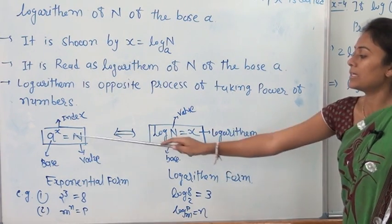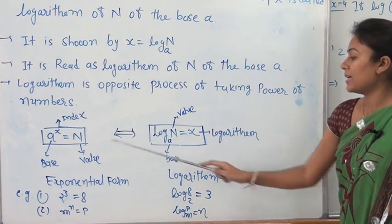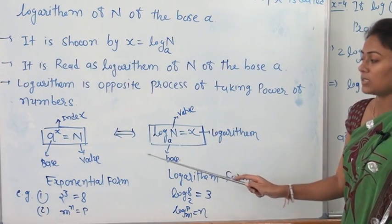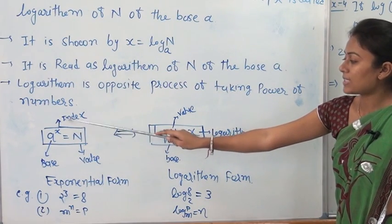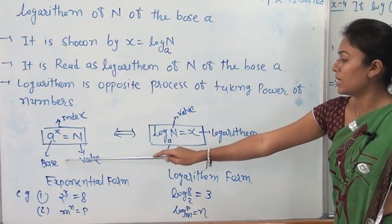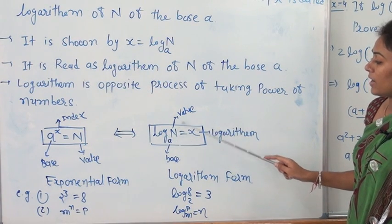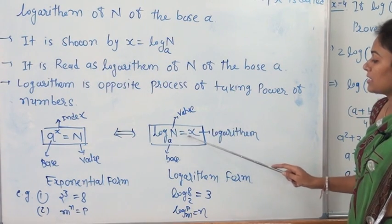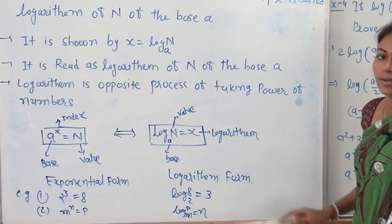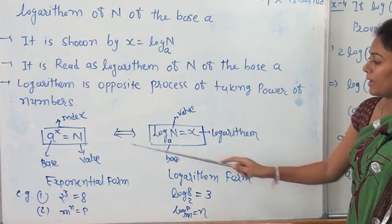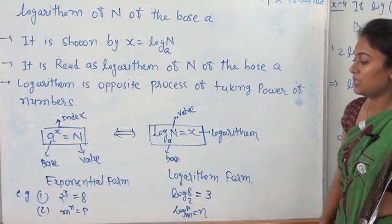The base is the same in both forms, but the values of x and N interchange their positions. In the exponential form a raised to x, x is the index and a is the base. In the logarithm form, N is the value, a is the base, and x is the logarithm of value N.